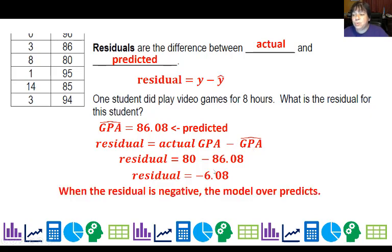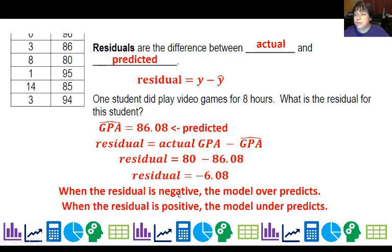By the way, when the residual is negative, was the actual above or below my prediction. It was actually below. So the residual tells you where your actual is compared to your predicted. People want to do predicted compared to actual and they tend to switch them. So when the residual is negative, the model over predicts. When it's positive, it under predicts.